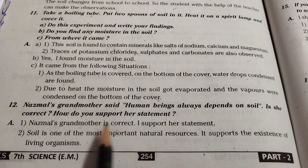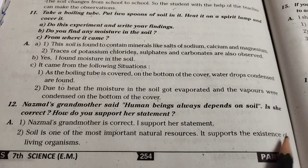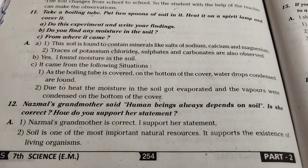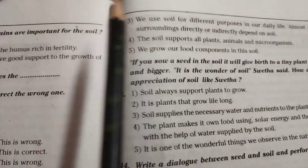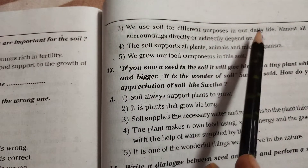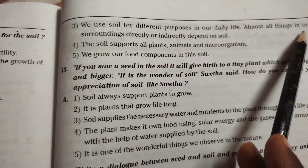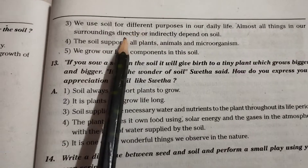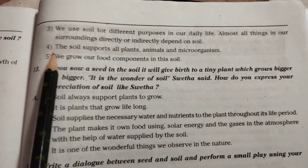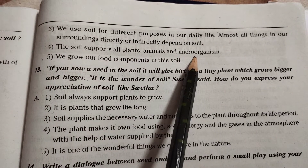Twelfth one: Soil is one of the most important natural resources. It supports the existence of living organisms. We use soil for different purposes in our daily life. Almost all things in our surroundings, directly or indirectly, depend on soil. The soil supports all plants, animals, and microorganisms.